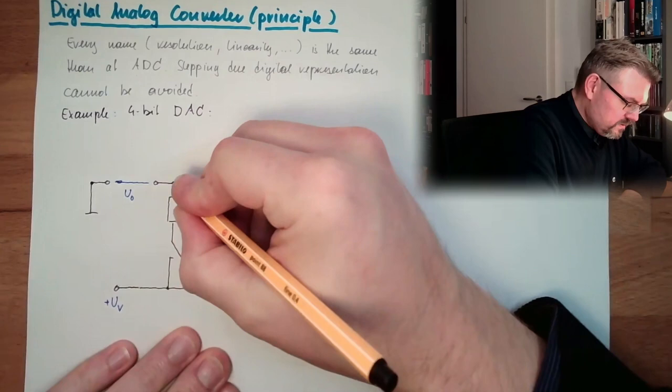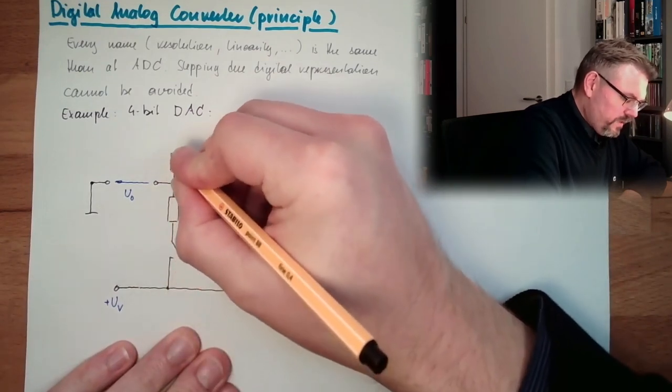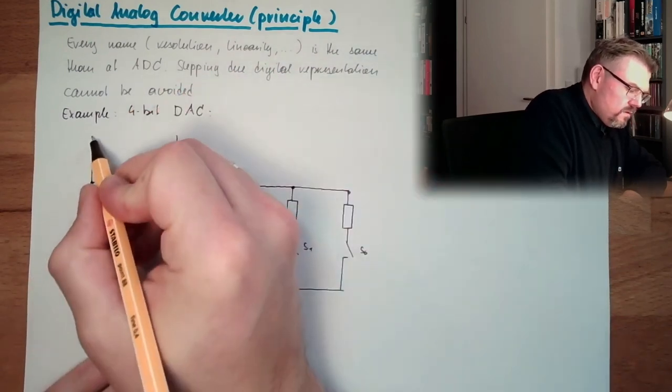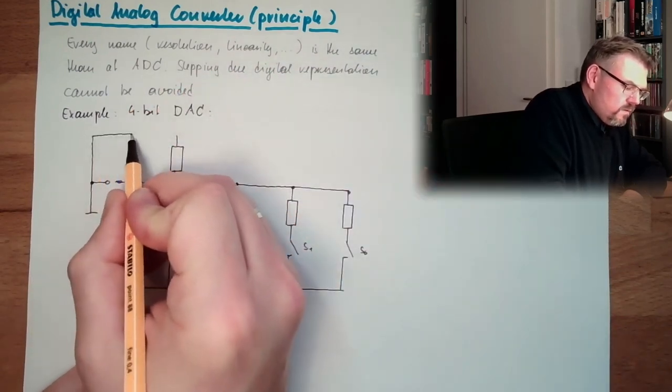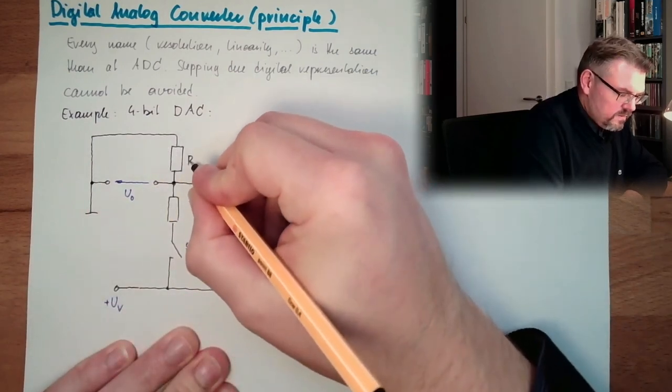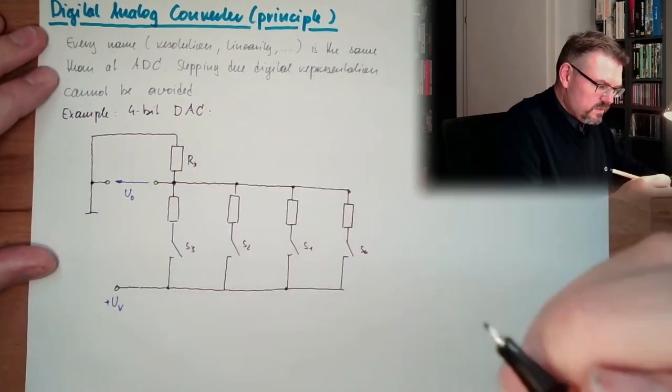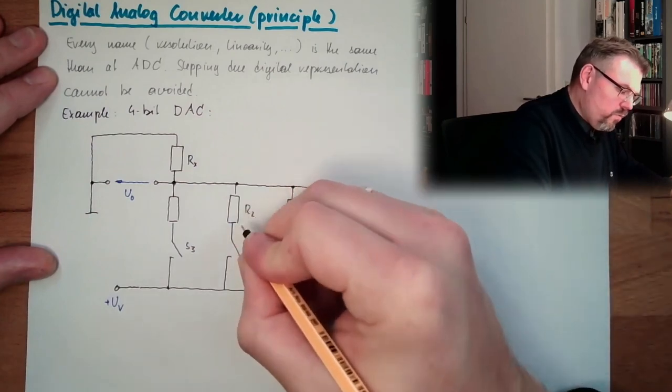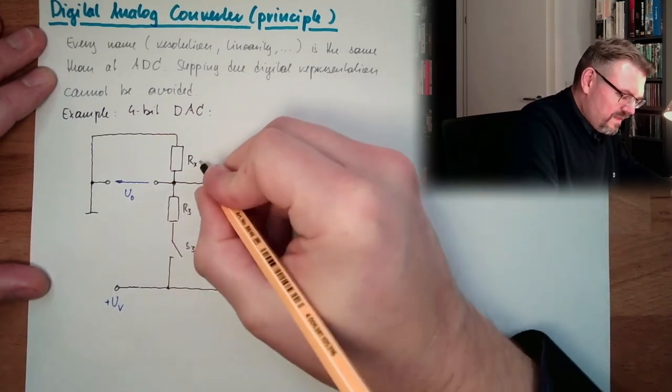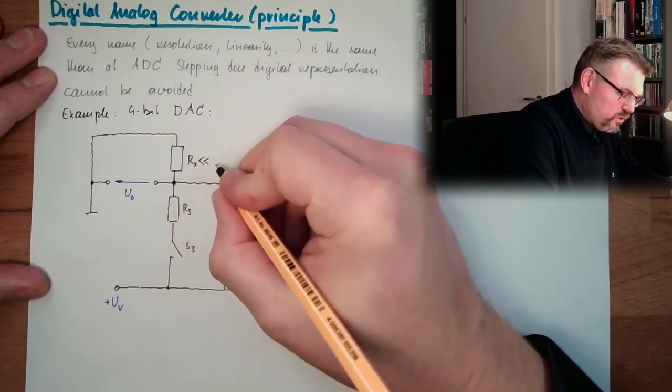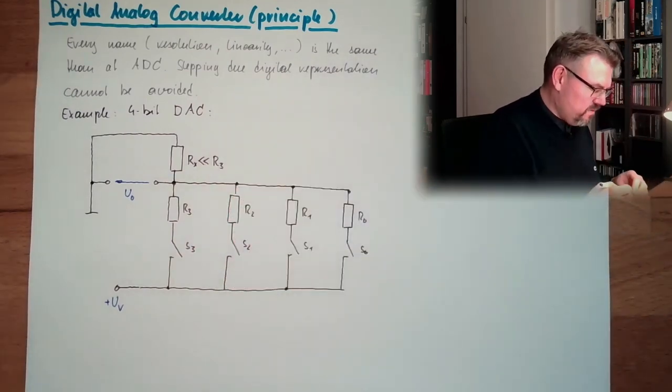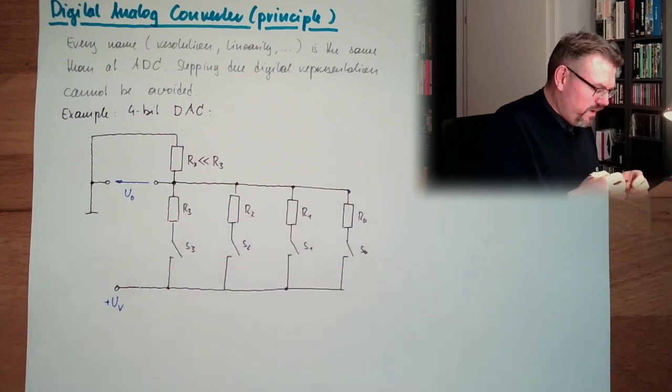How to reach this? We will also build in one resistor here, Rx. So we have here an R0, we have here an R1, we have here an R2, we have here an R3. And let's say this Rx is much, much smaller than R3. This is very tiny, a small resistor compared to R3.